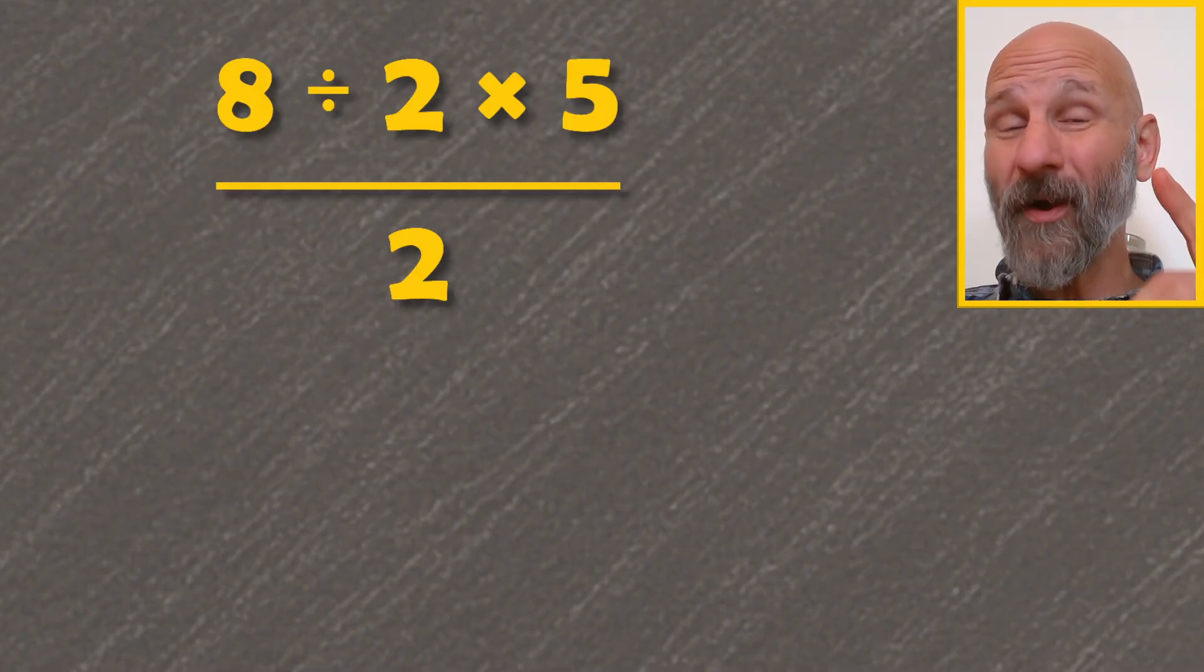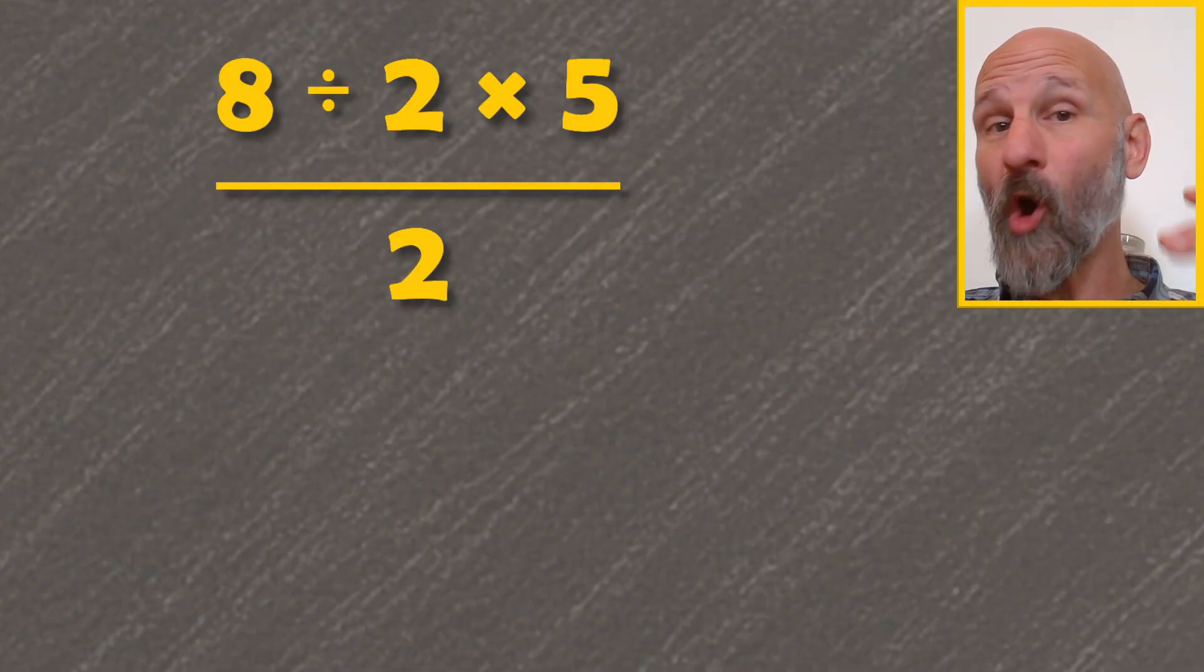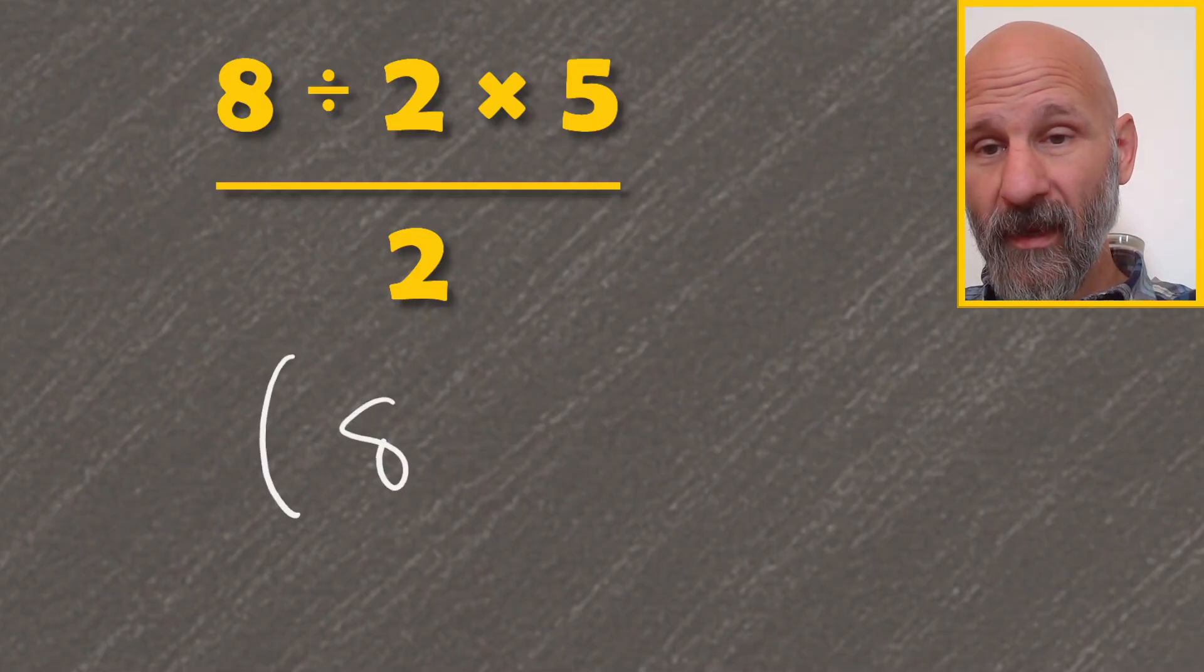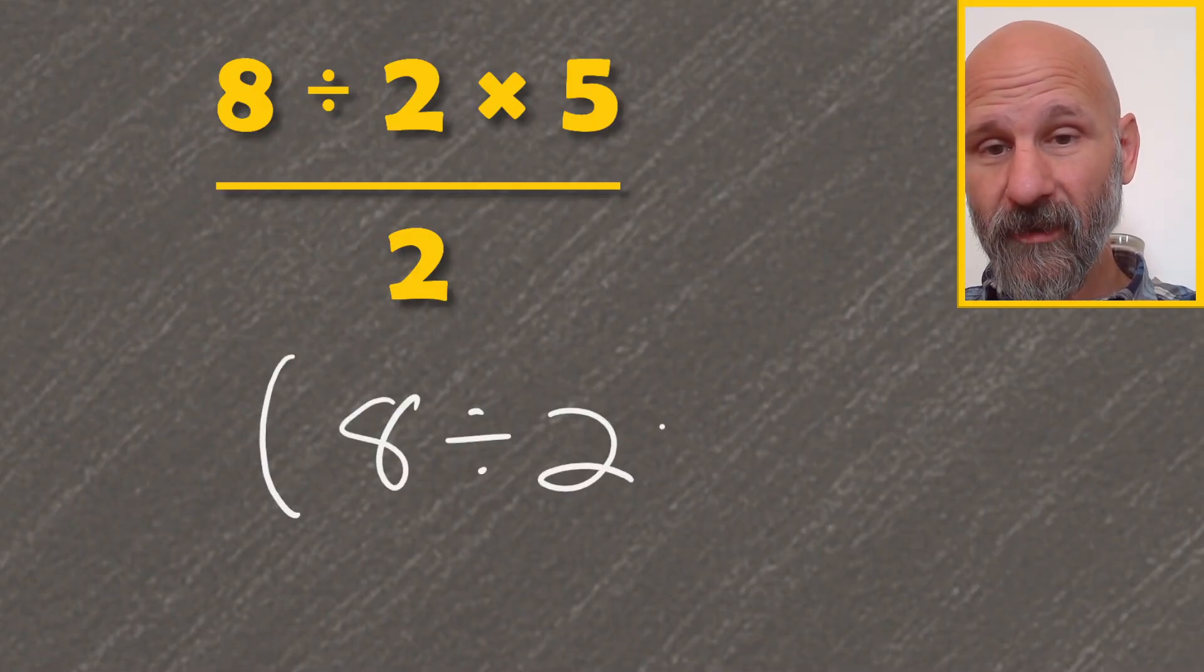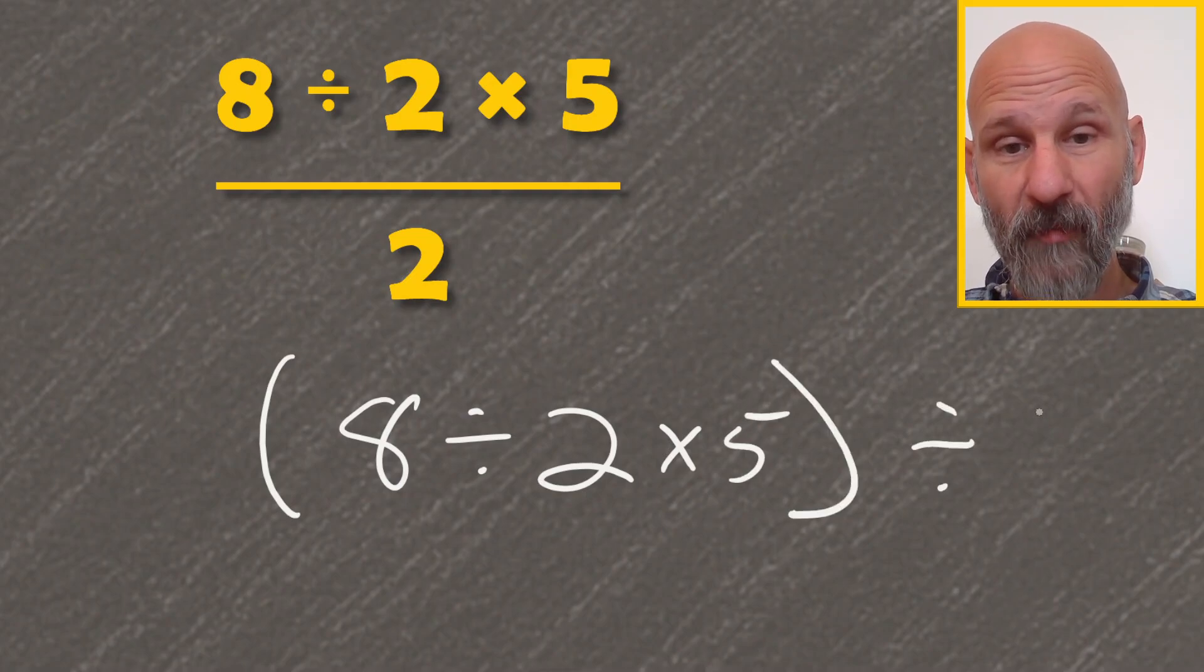So another way of writing this here, 8 divided by 2 times 5 over 2, is in parentheses, 8 divided by 2 times 5 in parentheses, and then divided by 2.